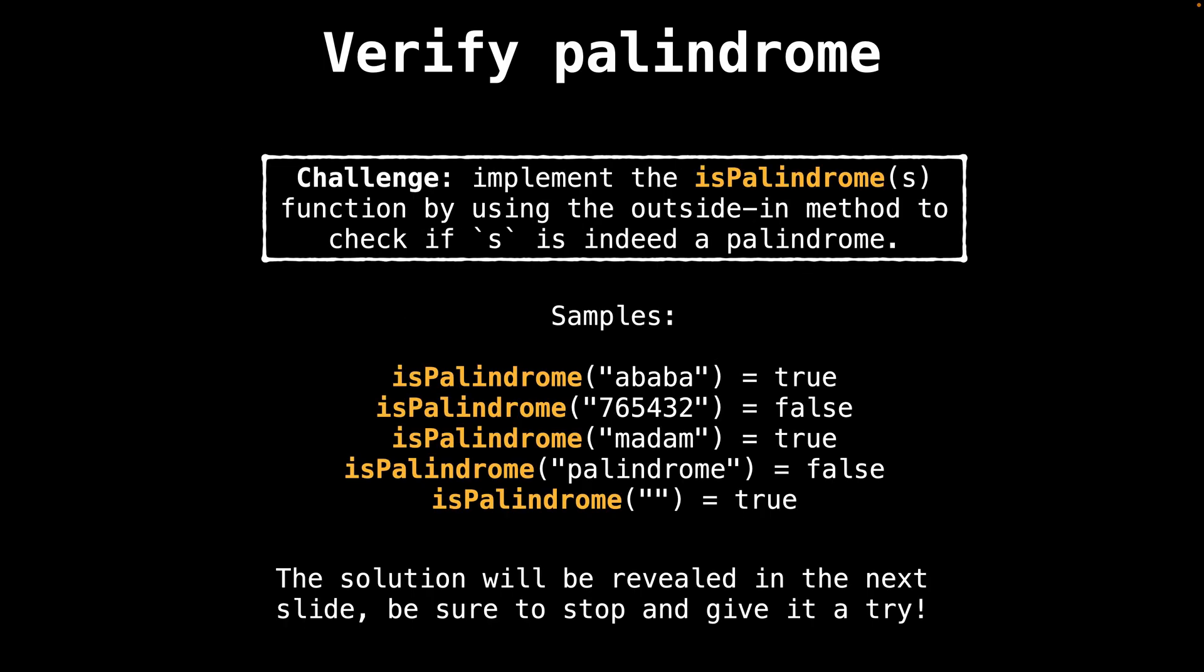Now I have a challenge for you guys to implement the is palindrome function, but by using the outside in method we discussed previously to check if the string is a palindrome. So below I have the is palindrome method with some simple examples of whether or not the following strings should be considered a palindrome or not.